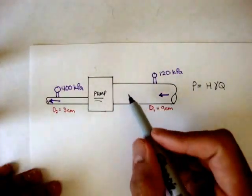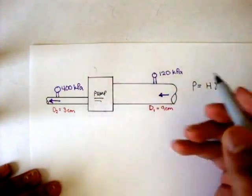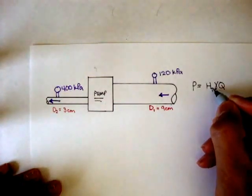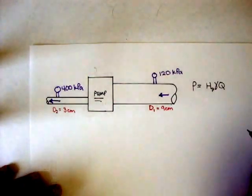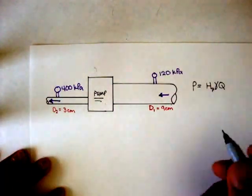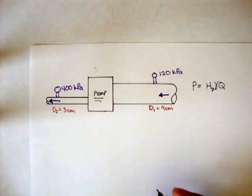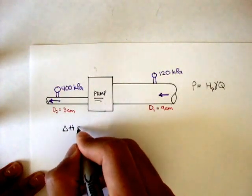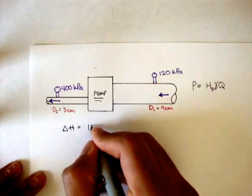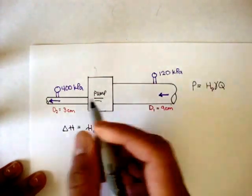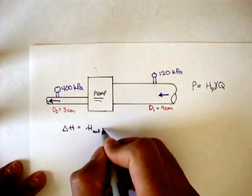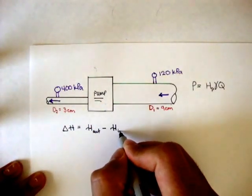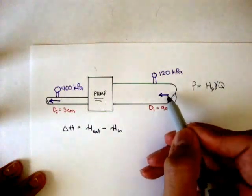And in this case, the device we're looking at is this pump. So we're going to look at the pump head, sub p. And the equation we derived in our last video was the change in the total energy head is equal to the energy head coming out. In this case, it would be over here, minus the energy head coming in, which would be here, because the water is coming in this way.